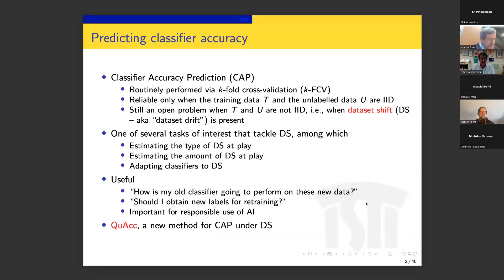Let me introduce classifier accuracy prediction. This is a task that we normally perform via k-fold cross-validation. The problem with k-fold cross-validation is that it returns reliable results only when the training data and the test data are IID — identically and independently distributed. It's still an open problem when T and U are not IID, a situation described as the unlabeled data being out of distribution, or as dataset shift.